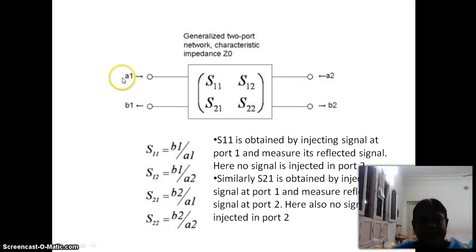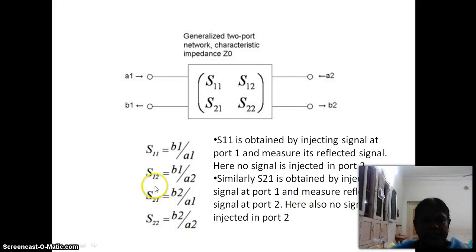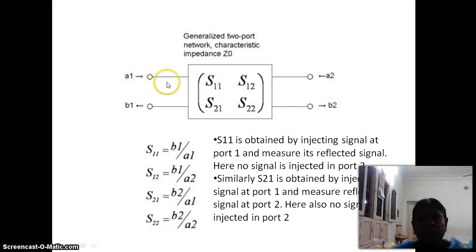Similarly, S21 is obtained by injecting signal at port 1 and measuring the transmitted signal at port 2, with no signal injected at port 2. S22 is obtained by injecting signal at port 2 and measuring its reflected signal at port 2 itself, with no signal injected at port 1. S12 is obtained by measuring the signal at port 1 by injecting the signal at port 2, with no injection at port 1. These are the four S parameters.